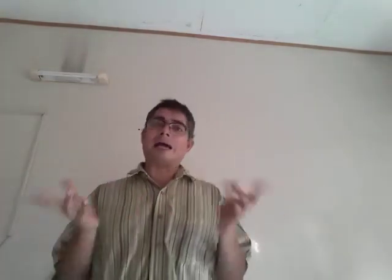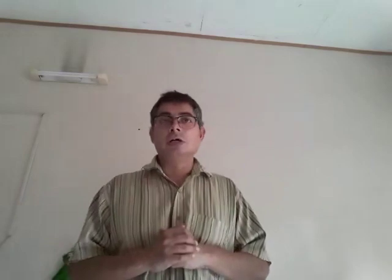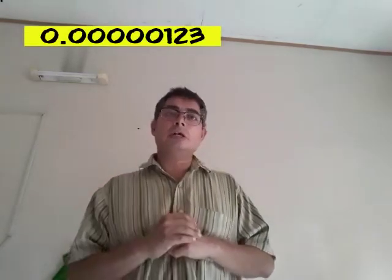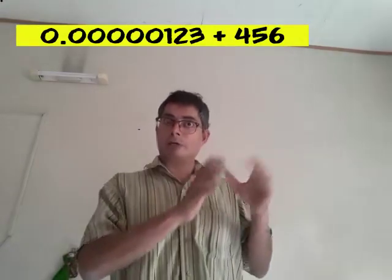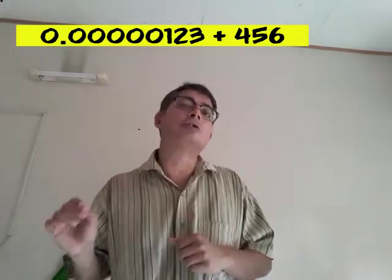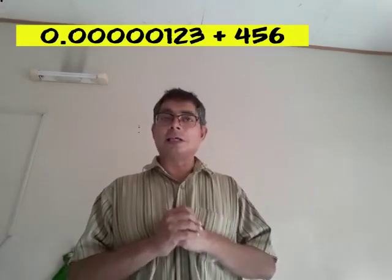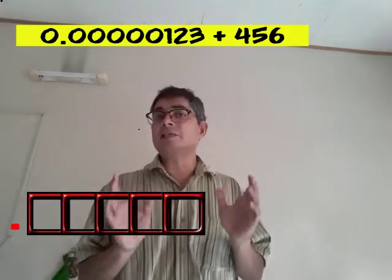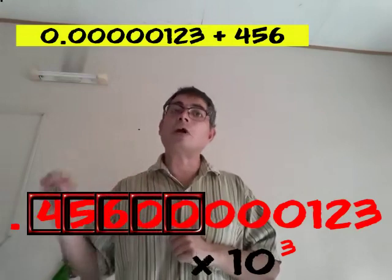Suppose you are trying to add or subtract two numbers that are widely differing in magnitude. Say you are trying to add 0.0000123 with the number 456. So 456 is one number, a huge number, and the other number is small 0.0000123. Let's pretend that I am using a floating point system which has only 5 digits for the mantissa. So it can store only 5 most significant digits. Now when you add them, the result is 456.0000123.